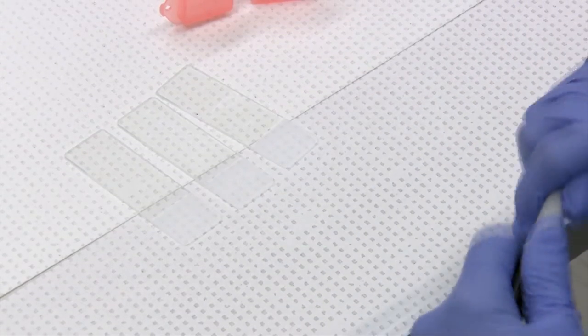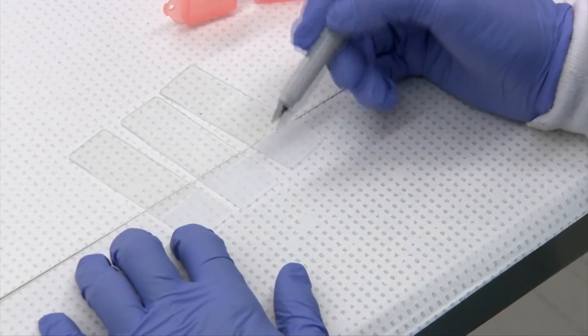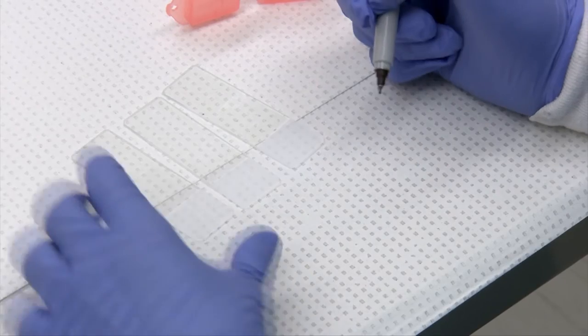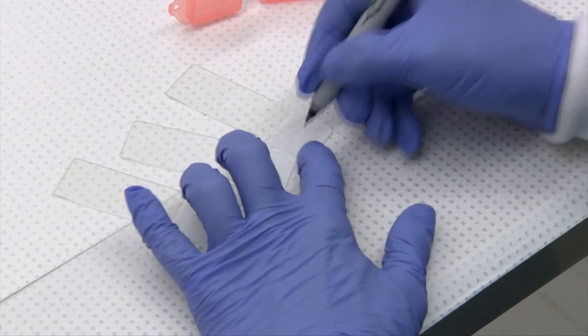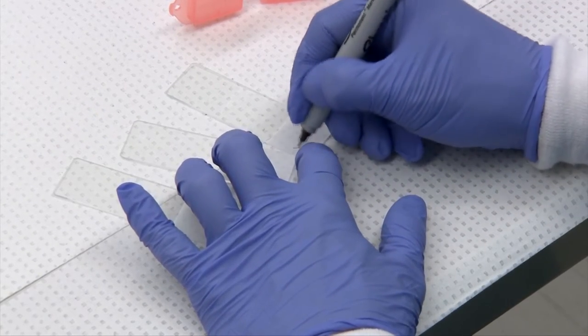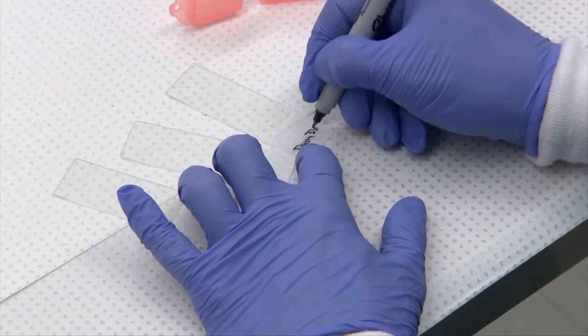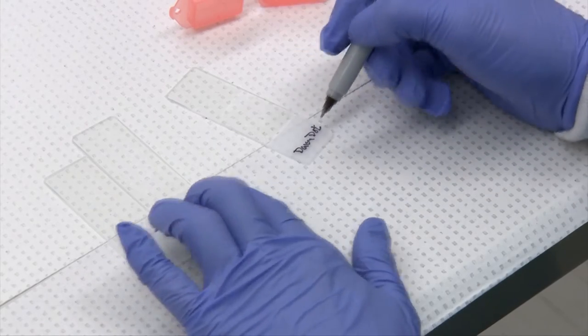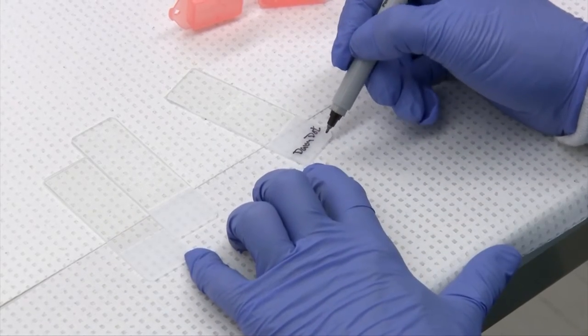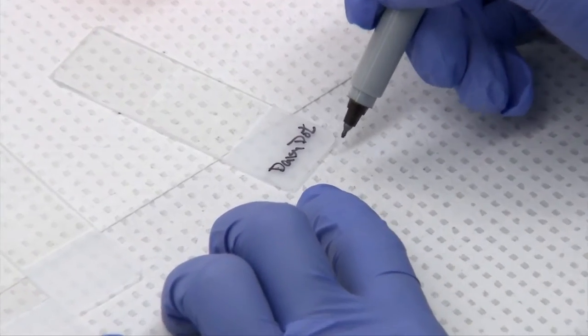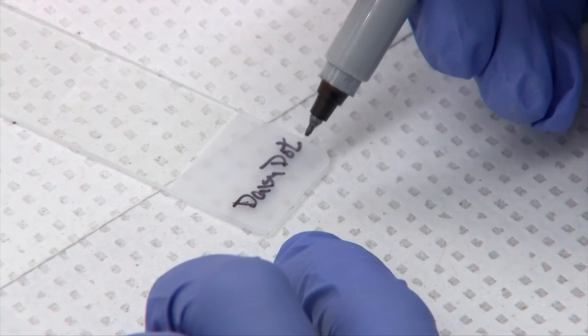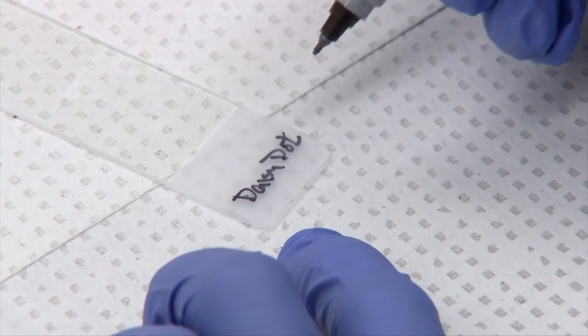Labeling your slides is important obviously. So you want to identify who your patient is. So say for example this was Daisy Dot. You want to label your slide very close to the bottom of the frosted edge. And the reason for that is you just don't want it being interfered with by the stain.